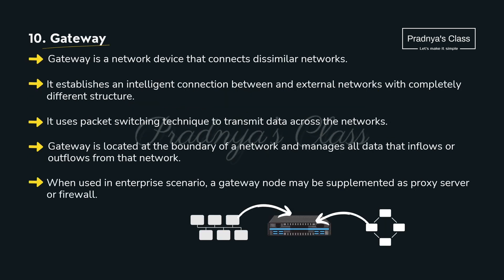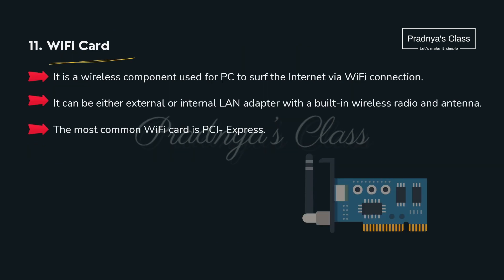Here is one more network device used to connect dissimilar networks — it connects different types of networks together. Finally, the last network device is a Wi-Fi card, which we use in a PC for personal use.